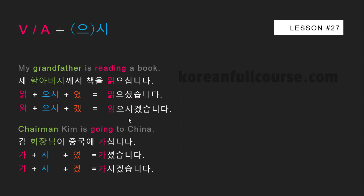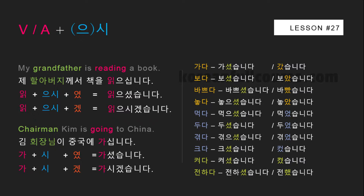Let's learn how to conjugate verbs with these honorific particles in the past and future tenses. The honorific particle is attached directly to a verb or adjective stem right before the past and future tense suffixes. Because of this particle order, any verb now ends with the same syllable 시 — 읽으시, 가시 — so you don't need to think about which of the three past tense suffixes (아, 어, or 였) to use. Now 읽으시 and 가시 are pseudo verb stems, and since they end with the vowel 이, you use the suffix 였 in the past tense for any type of verb, as long as there is the honorific particle 시.